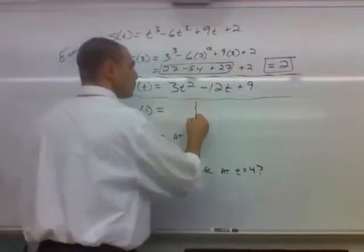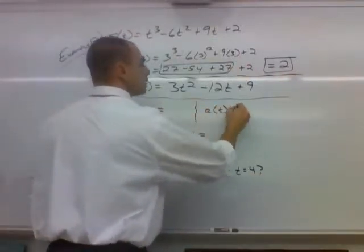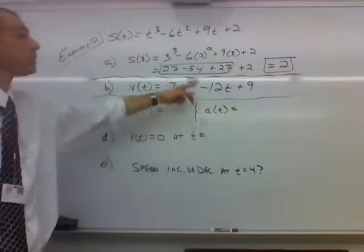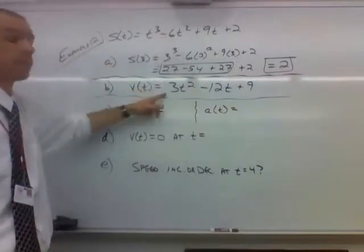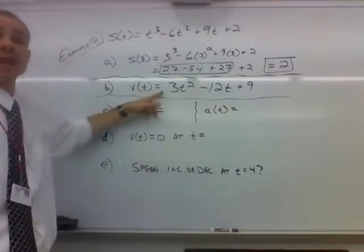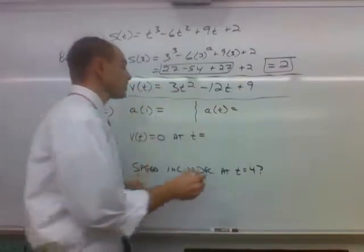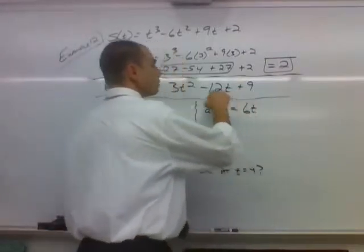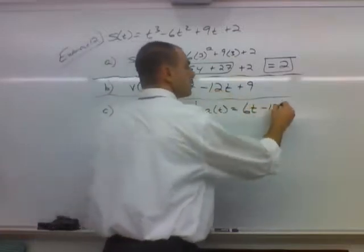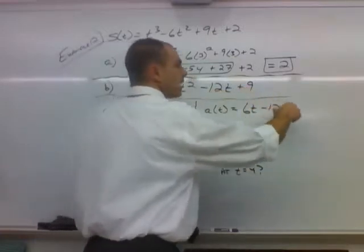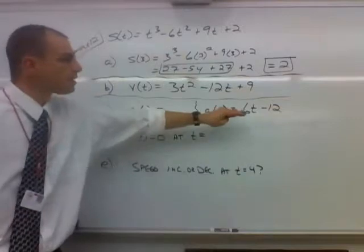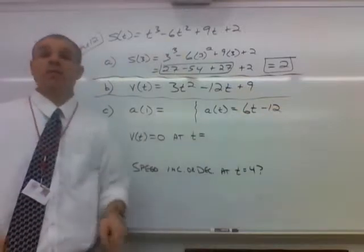So we have A of t. A of t, we know, is the second derivative of position and the first derivative of velocity. So let's derive this velocity function. What's the derivative of 3t squared? Yeah, it's going to be 6t. And the derivative of 12t? It will be 12. And the derivative of 9 is 0. So there's our acceleration for any value of t.